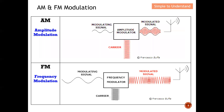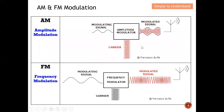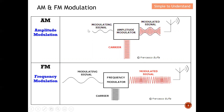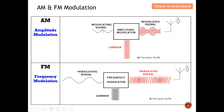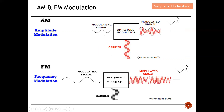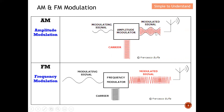Let me activate the animation. This diagram shows both amplitude modulation and frequency modulation. If you still remember from the previous video, this is the modulating signal — also called the intelligence signal or baseband signal. This is the information that we want to send over. This is the carrier; as the name implies, the carrier helps carry the information. This is what we call the modulated signal.